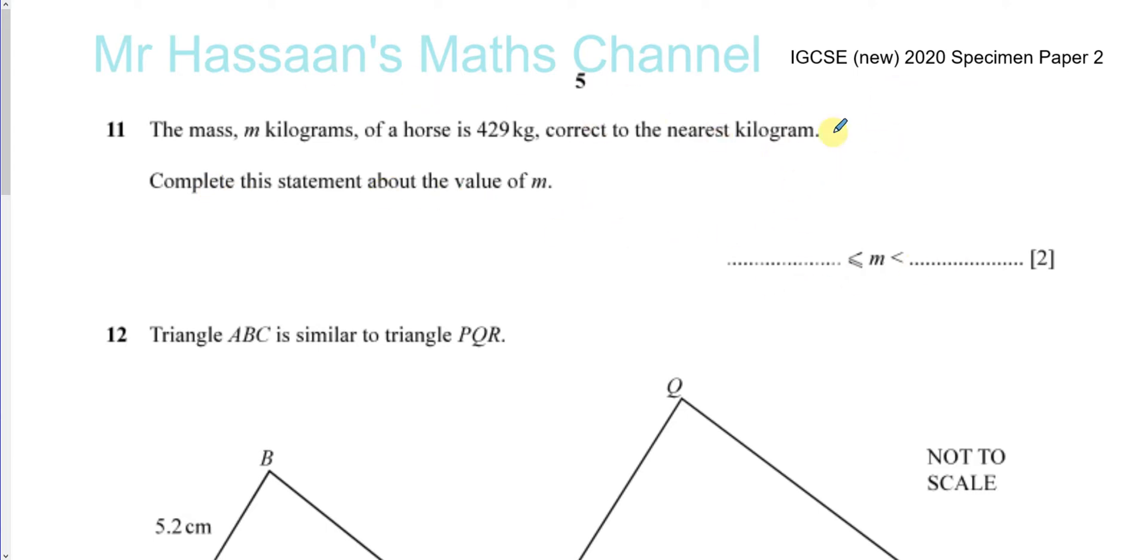So when the number was rounded, it became 429. Basically the lowest it could have been would have been 428.5, because if you round that, it becomes 429. That's the lowest it could have been.